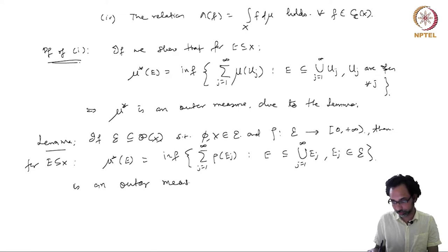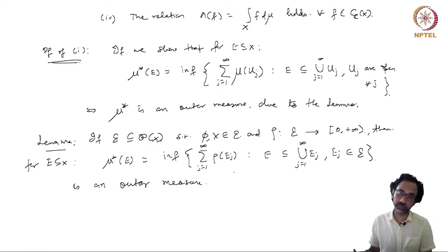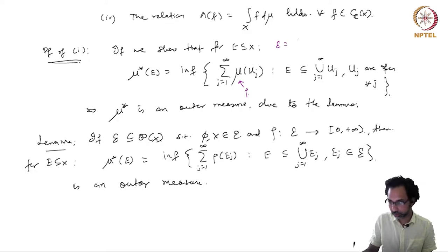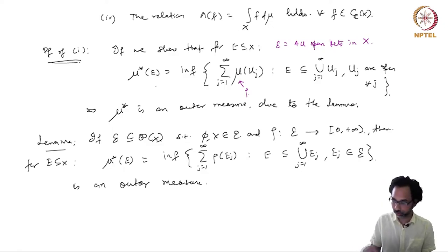This was proved — I left it as an exercise, noting that the proof is exactly as you would prove the Lebesgue outer measure is an outer measure. Here our ρ is μ on open sets, and our ℰ is the collection of all open sets in X. Then if we show this equality holds, μ* will automatically be an outer measure.